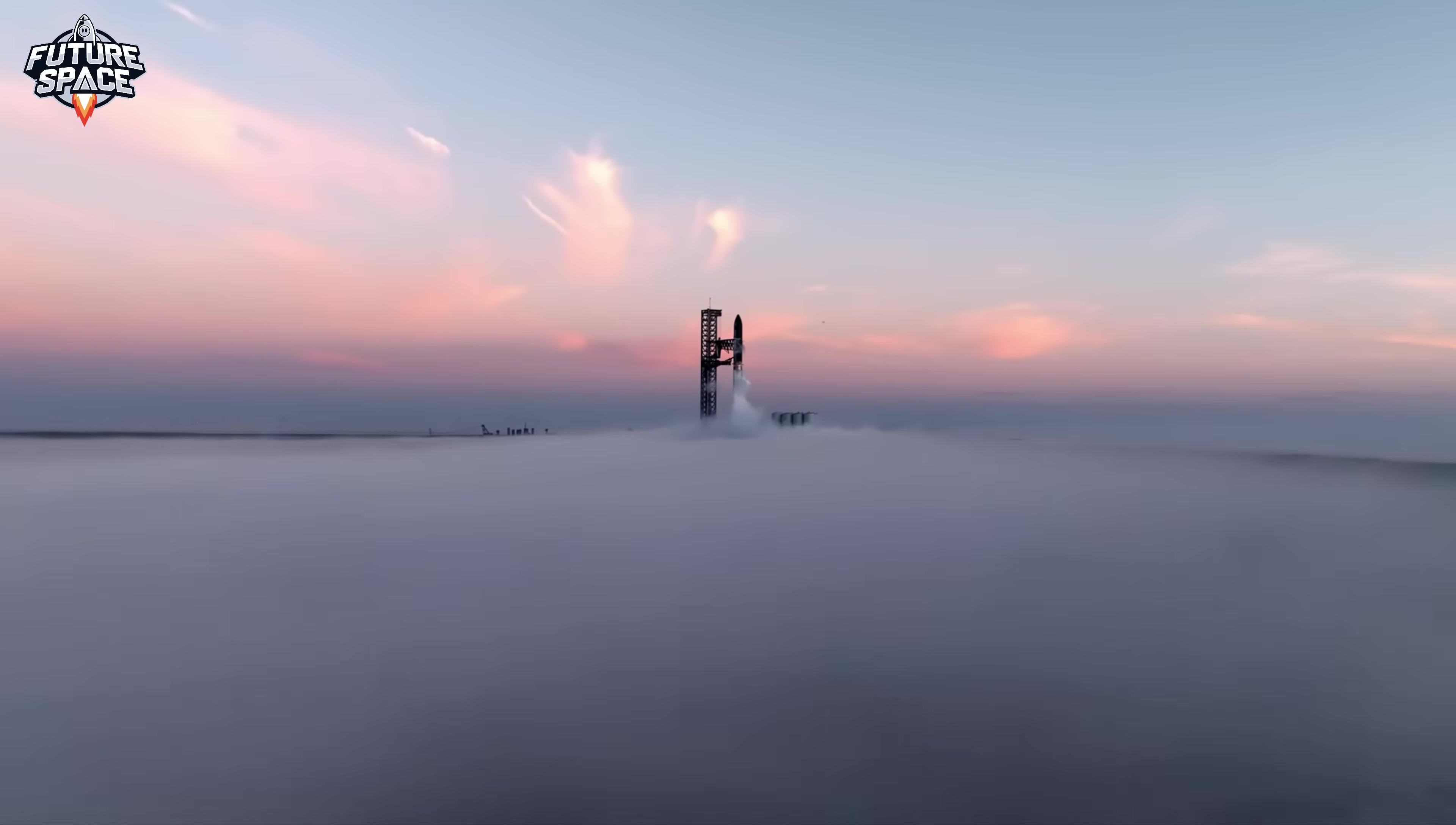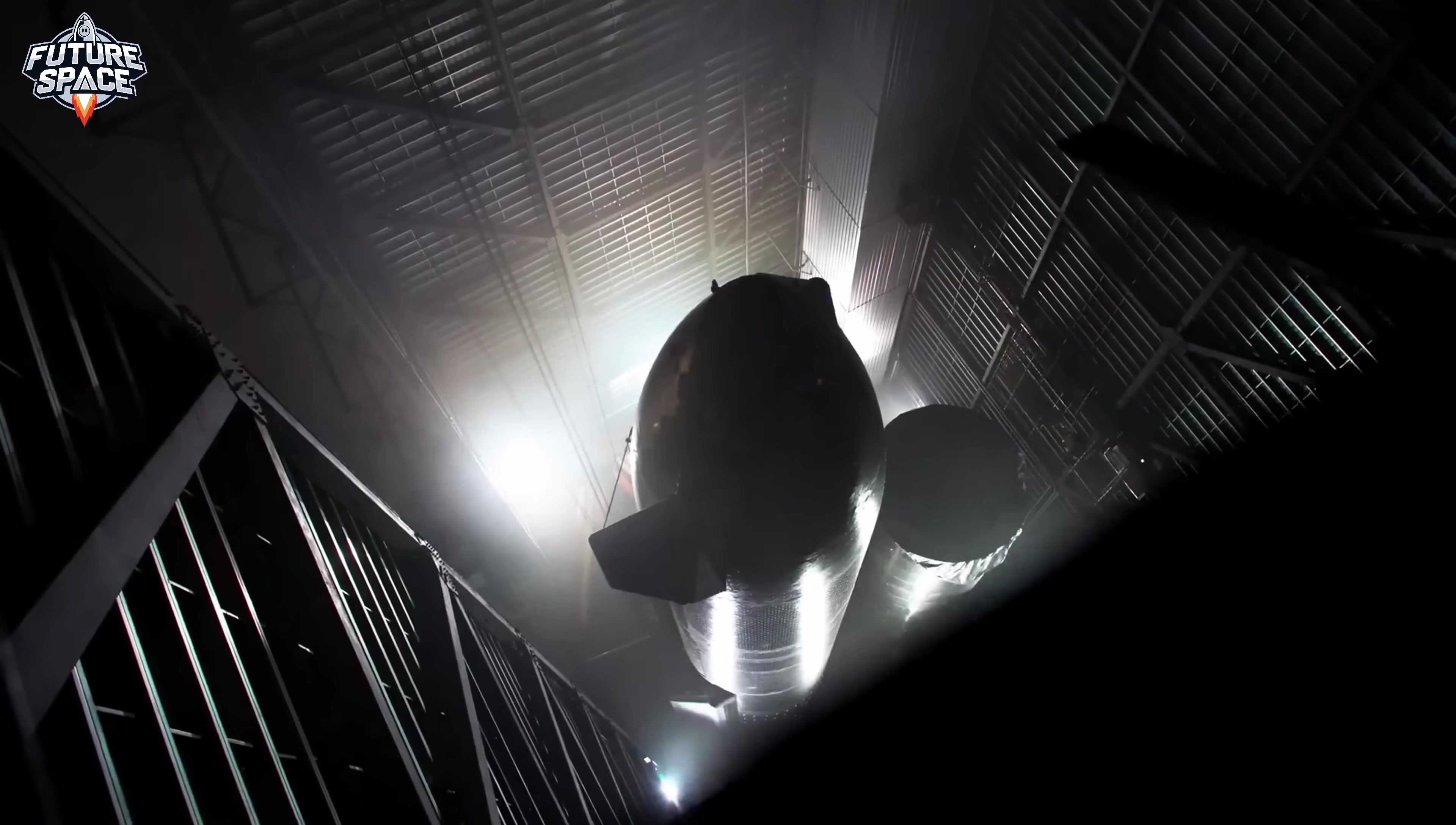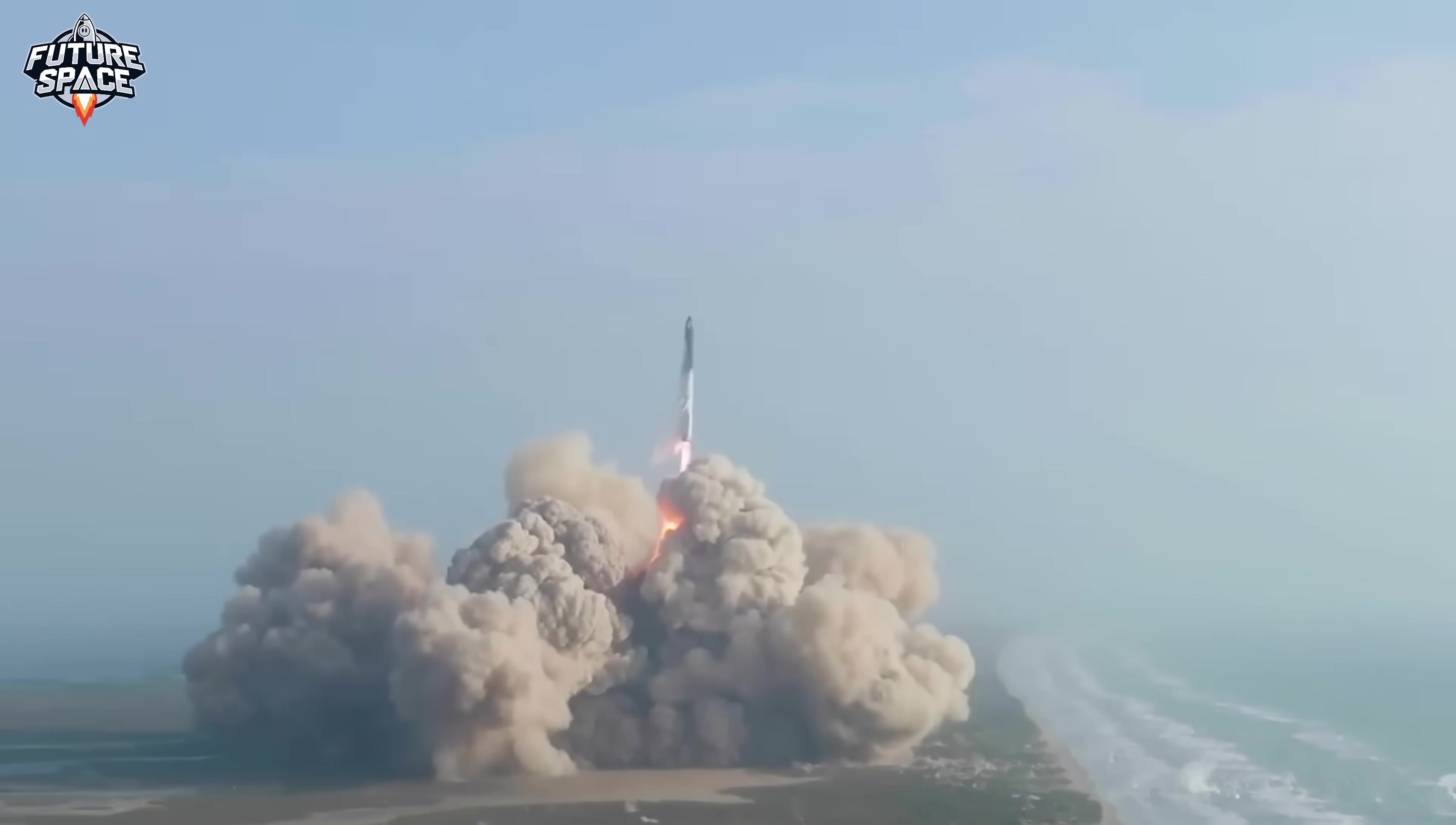11 minutes. That's how long SpaceX's $3 billion Starship lasted before exploding. Flight 8 spun out of control. Flight 9 disintegrated on reentry. While Elon keeps saying these are successful failures, NASA scientists just revealed the real problem. And it's not engine failure or fuel leaks like everyone thinks. What if I told you the explosions are happening because SpaceX is making their rockets too light to survive? Let's dive right in.